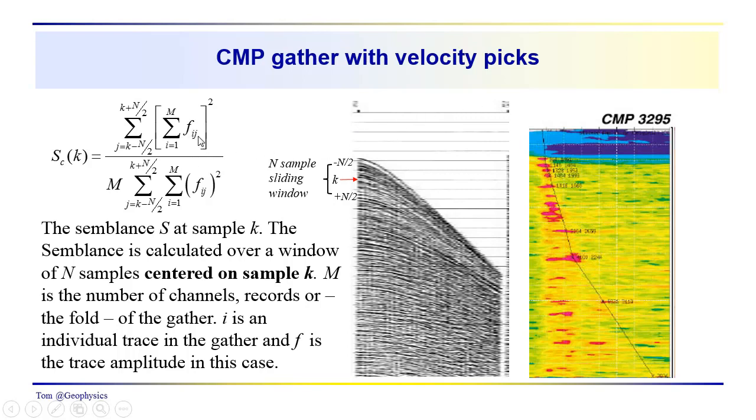So we're summing over the traces in the window, trace by trace in the gather, or the samples in the window, trace by trace in the gather. So we have m-traces or an m-fold gather.